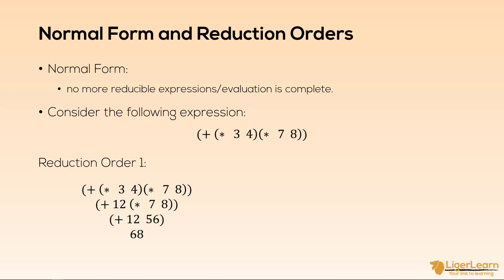Remember, it's called the normal form because there are no more reducible expressions. Now, with the second reduction order, we choose the other reducible expression first and reduce it to get the value of 56. Next, we reduce the other expression to get 12, and then we reduce the final expression to reach the normal form of 68.